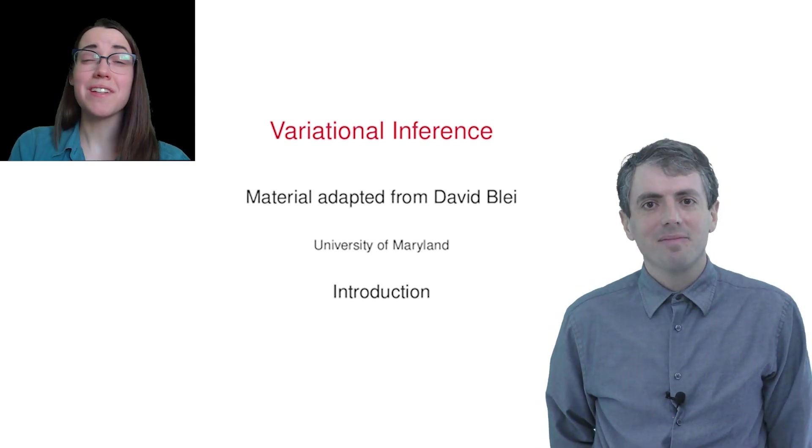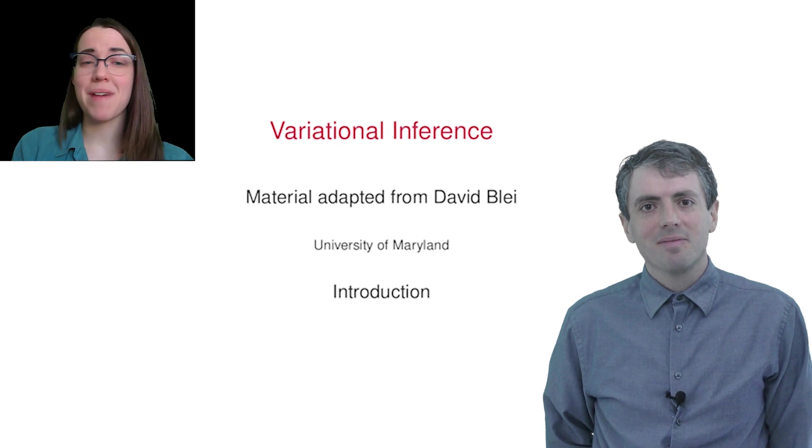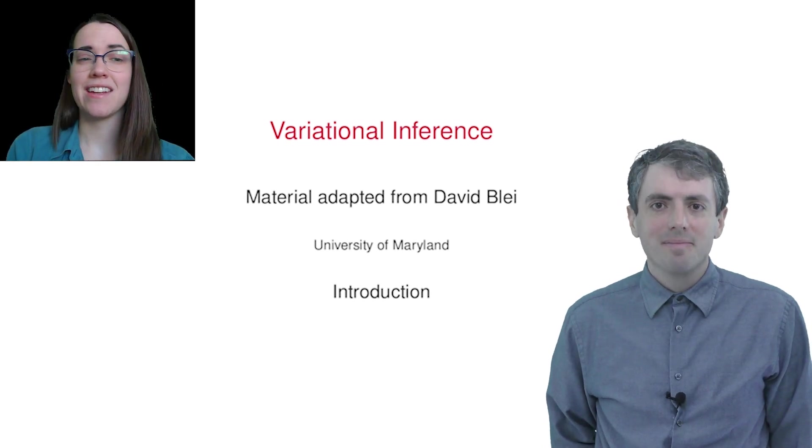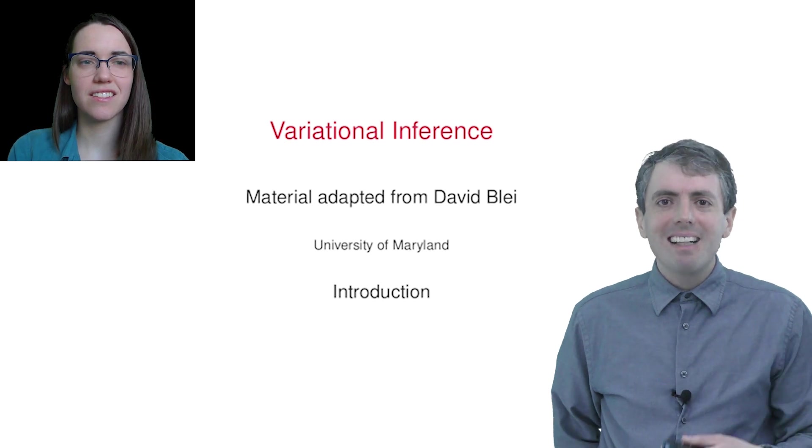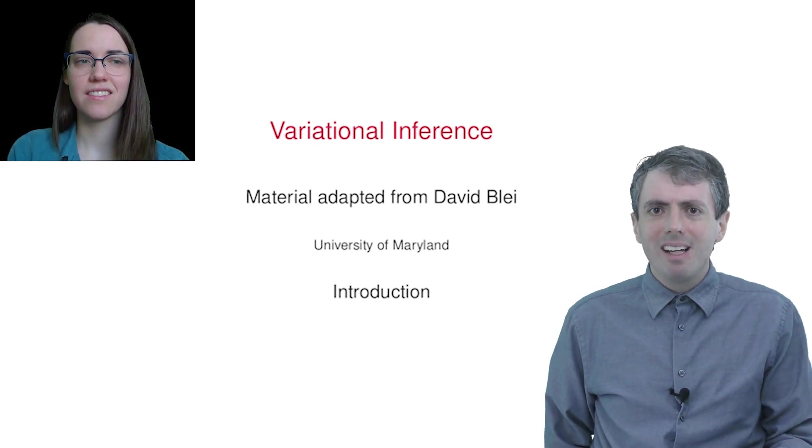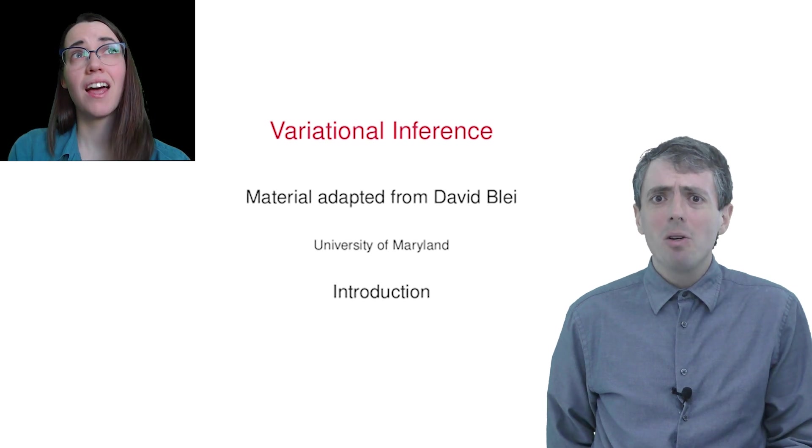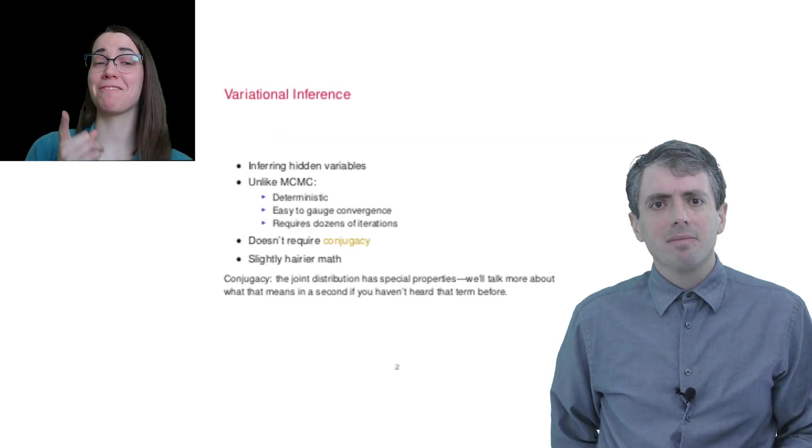If you didn't watch the previous video, you might want to go back to get the big picture and how to do inference with Gibbs sampling. Variational inference is doing exactly the same thing. Given some data, infer the underlying hidden variables. Why do we need two ways of doing it?